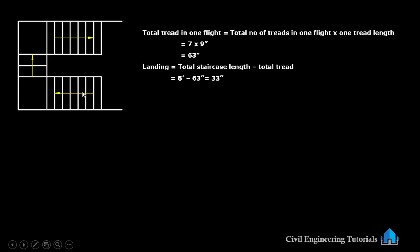Total number of risers: 19 numbers. Total number of treads: 18 numbers. The lines represent the risers and these are the treads. Total 18 numbers of treads. Total risers 19 numbers — from 19 numbers: 6.5 inch height riser 14 numbers and 7 inch height riser 5 numbers. Total treads 18 numbers. Landing is 33 inch.